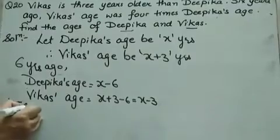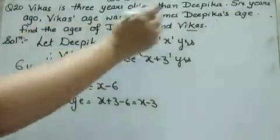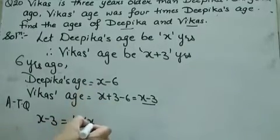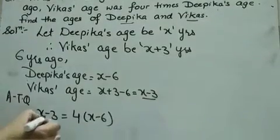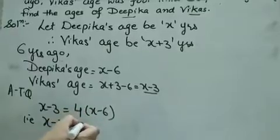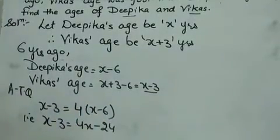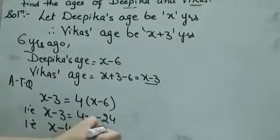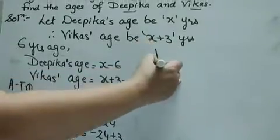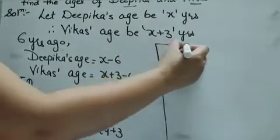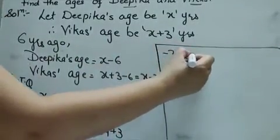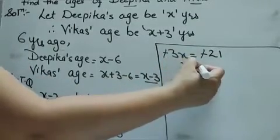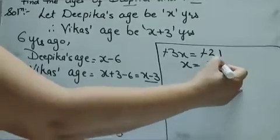According to the question, Vikaas's age 6 years ago was 4 times Deepika's age. So: X minus 3 equals 4 into (X minus 6), giving X minus 3 equal to 4X minus 24. Bringing X terms together: X minus 4X equals minus 24 plus 3, so minus 3X equals minus 21. The negatives cancel, and X equals 21 by 3, that is 7.